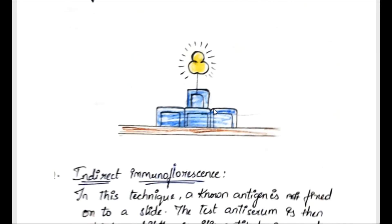In direct immunofluorescence, the method involves fixing the specimen — which may be an antigen, cell, or microorganism containing the antigen — onto a slide. Then a specific fluorescent dye labeled antibody is added to the slide and incubated. That means we fix the antigen on the slide, prepare the antibody mixed with fluorescent dye, add it to the slide, and incubate.